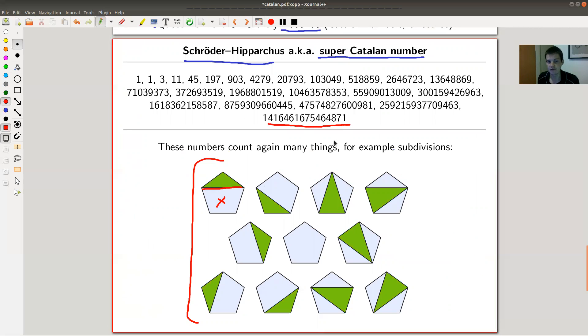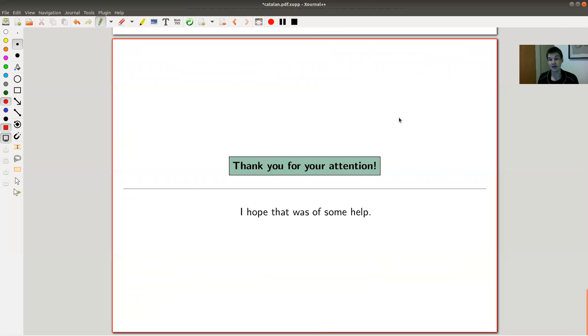So yeah, whatever the number is, it doesn't really matter. It's huge. But I'm already starting waffling. So let me wrap up. So Catalan numbers, my favorite sequence of numbers. Why? Well, they look strange. So why should I like a sequence of numbers? Okay, there's a 42, but otherwise why should I like them?